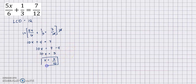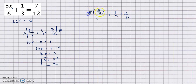The value of X is 3 over 10. We would like to check if this is really the solution, so we substitute 3 over 10 for X. This gives: 5 times 3 over 10, all over 6, plus one-third, is equal to 7 over 12. Since 5 and 10 simplify, this becomes 3 halves over 6.